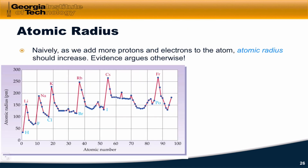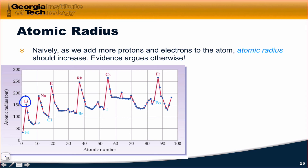What about atomic radius? Naively, as we add more electrons to the atom, it seems like the atomic radius should increase — we're just adding more electrons, and so they should take up more space in theory. But the evidence argues otherwise. Watch what happens across the second period from lithium to fluorine: atomic radius actually decreases.